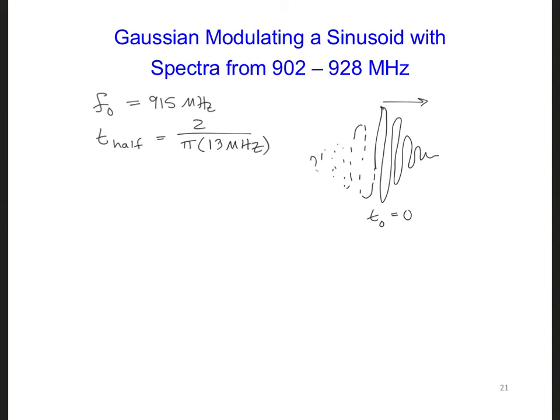then we want to correspondingly increase how long we delay the time step where we reach the peak of the Gaussian. I find a typical good value to use for T0 is 3 times T1/2.